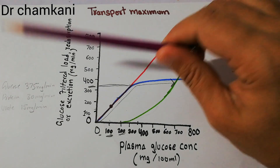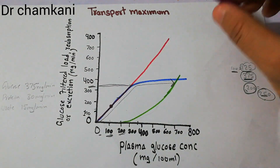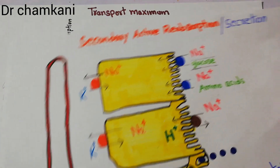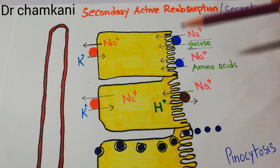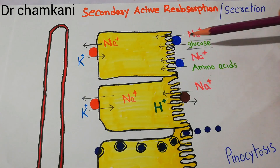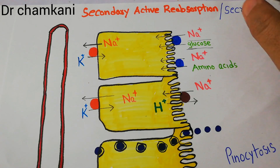Similarly, there is a transport maximum for proteins and for urates. Transport maximum simply means the limit at which all the carrier proteins which reabsorb that solute are fully occupied and can no further reabsorb, so the remaining solute will be excreted in urine. That's all about transport maximum, especially the transport maximum of glucose.